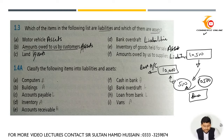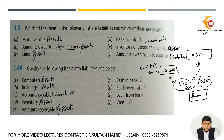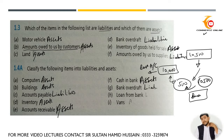Now classify the following items into liabilities and assets: computers are assets, building is an assets account, accounts payable is a liability, inventory is assets, cash and bank are assets, and bank overdraft once again comes under liabilities.